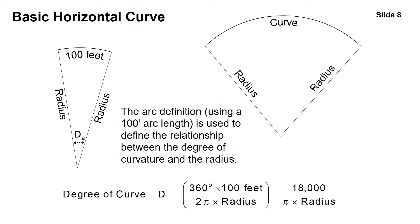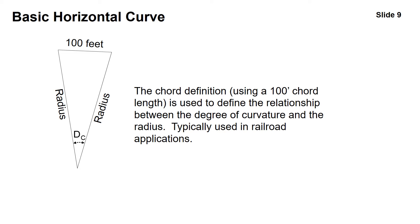For a basic horizontal curve, we can use the arc definition, which uses a 100-foot arc length to define the relationship between the degree of curvature and the radius. The degree of curve is equal to 18,000 over pi times the radius. There is another definition using a 100-foot chord length, typically used in railroad and some military applications, where that 100-foot length is a straight line instead of an arc. In highway alignment design we use the arc definition. The chord definition is less common but is another way to define the degree of curve and its relationship to the radius.